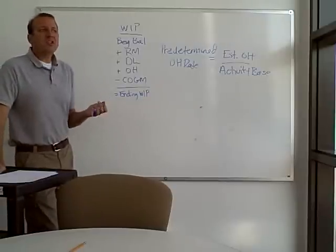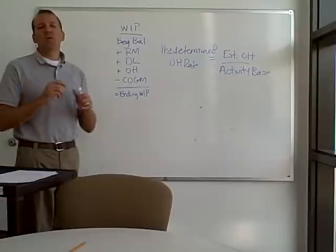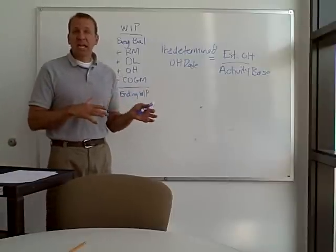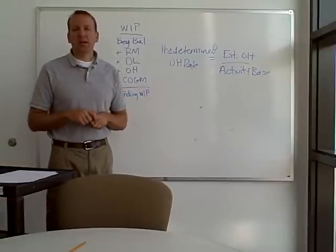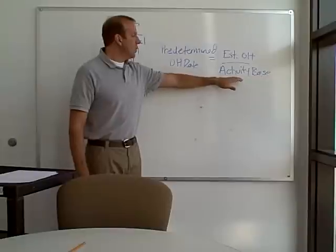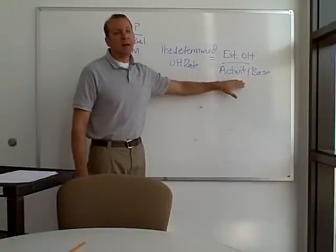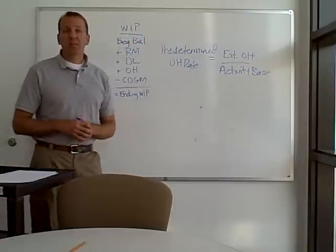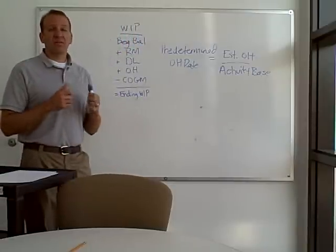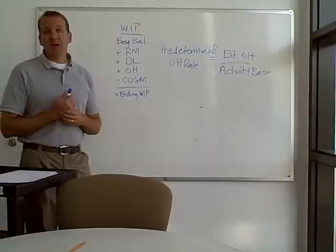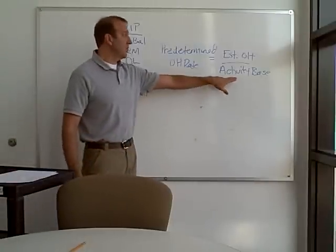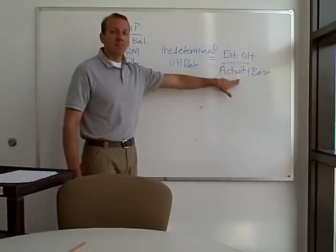We need to estimate how much overhead we're going to have this year — usually that's done based on past history and any changes we expect in the current year. Then we choose some sort of activity base. A very common one is direct labor hours, because we're already accumulating direct labor hours. But you could use square footage, direct labor costs, or almost anything associated with the business that you accumulate information on.